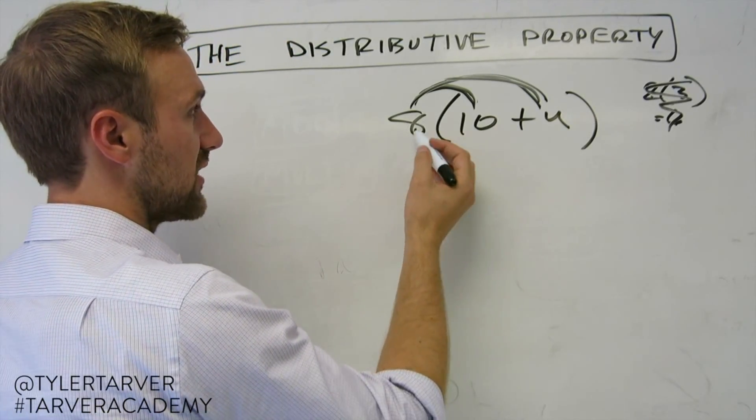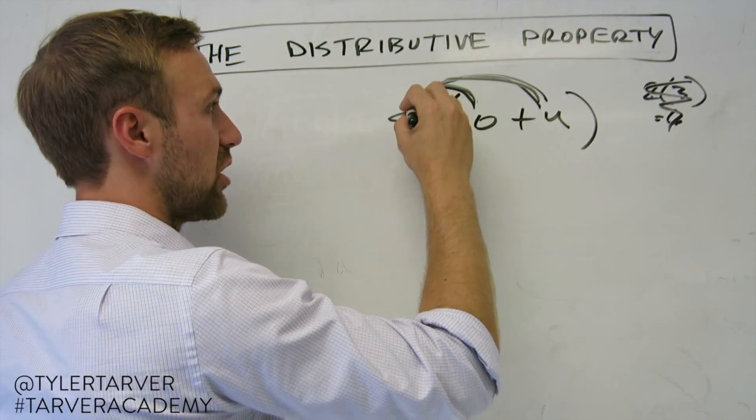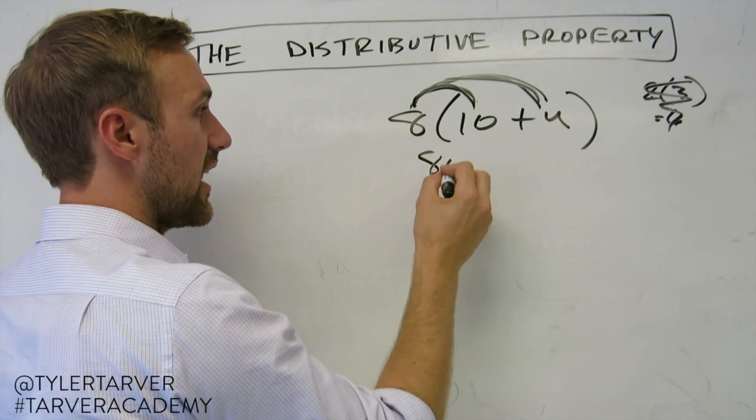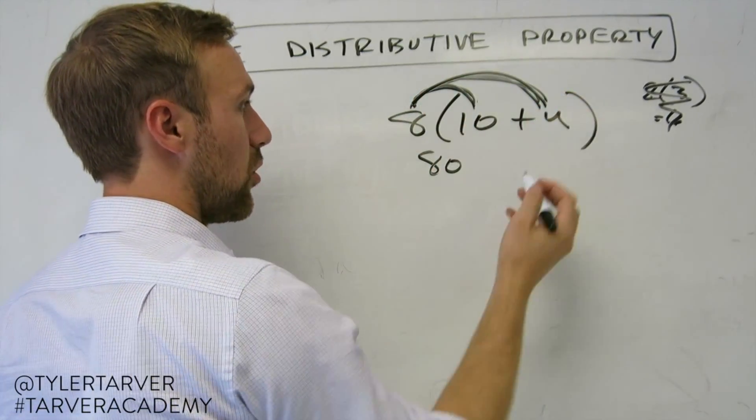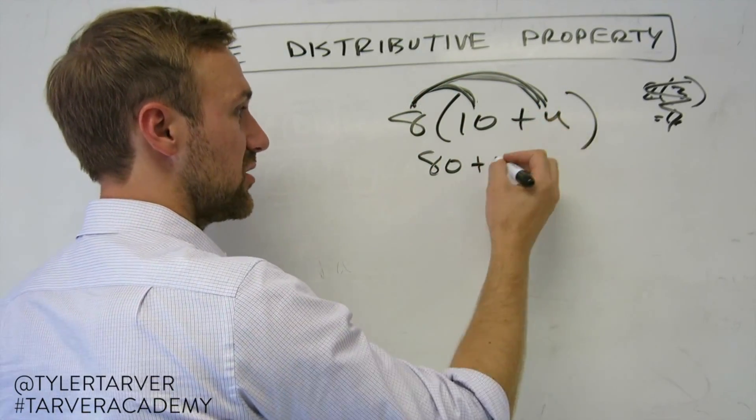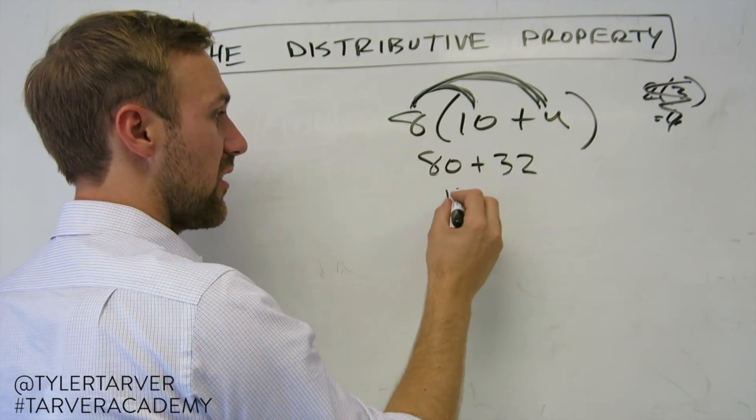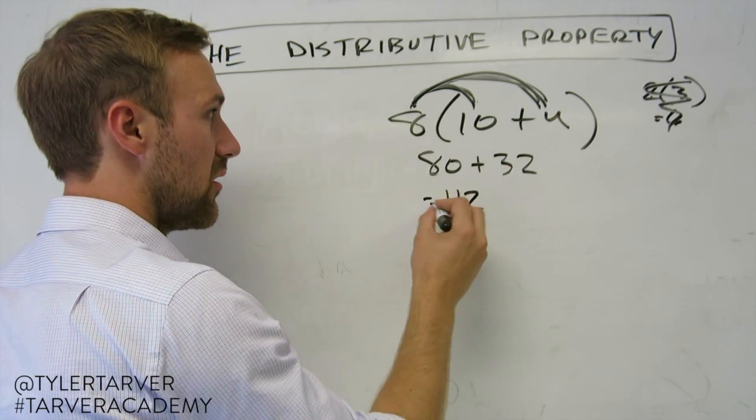So for instance, let's say we've got this little fella here. Distribute that eight in there. Eight times 10 is 80. And then we do eight times four, which is 32. Don't forget your sign. And then we add those two together. 112. You're done.